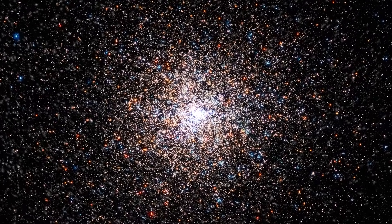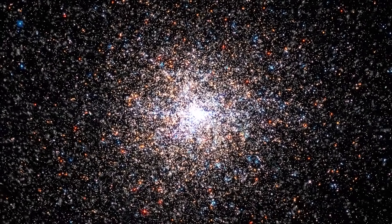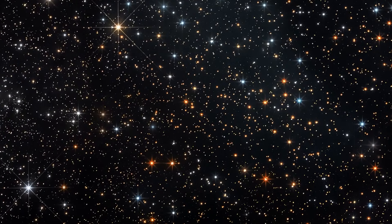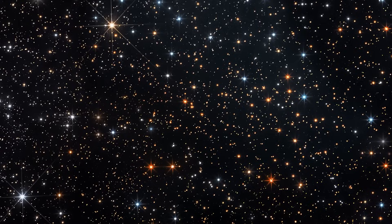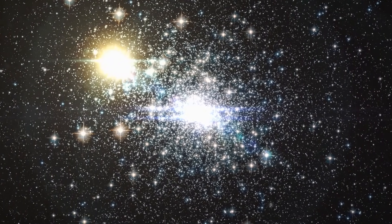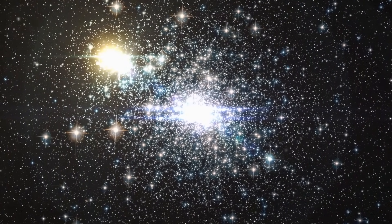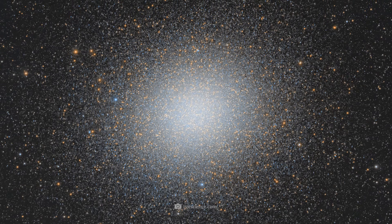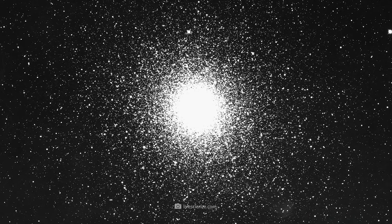However, as we continue toward the galactic center, we notice that we encounter globular clusters more and more frequently. These are dense, spherical clusters of hundreds of thousands of ancient stars that are among the oldest structures in the Milky Way. These so-called Population II stars contain only very small amounts of heavy elements and, as the second generation of stars in the universe, form an important part of the cosmic family tree. Globular clusters such as Omega Centauri, Messier 13, and 47 Tucanae orbit the center of the Milky Way in wide, often elliptical paths.